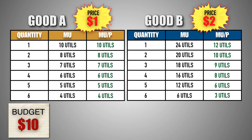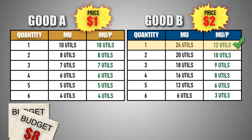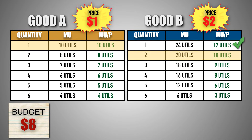From here, the consumer can compare the marginal utility per dollar for each unit of good A and good B, and find the utility-maximizing combination of both goods that fits their budget. At 12 utils per dollar, the first unit of good B has a greater marginal utility per dollar than the first unit of good A. As a result, the consumer will buy the first unit of good B at a price of $2, leaving the consumer with $8 left in their budget. At 10 utils per dollar each, the first unit of good A and the second unit of good B have the same marginal utility per dollar. As a result, the consumer will buy the first unit of good A at a price of $1, leaving the consumer with $7. Then the consumer will buy the second unit of good B at a price of $2, leaving the consumer with $5 left in their budget.